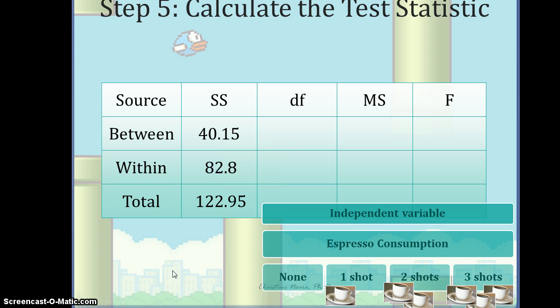Now we need to talk about the degrees of freedom. The between source of variability is due to being in a particular group — our independent variable, which is espresso consumption. We have four different groups, so the degrees of freedom between is the number of groups minus one: four minus one, which equals three.